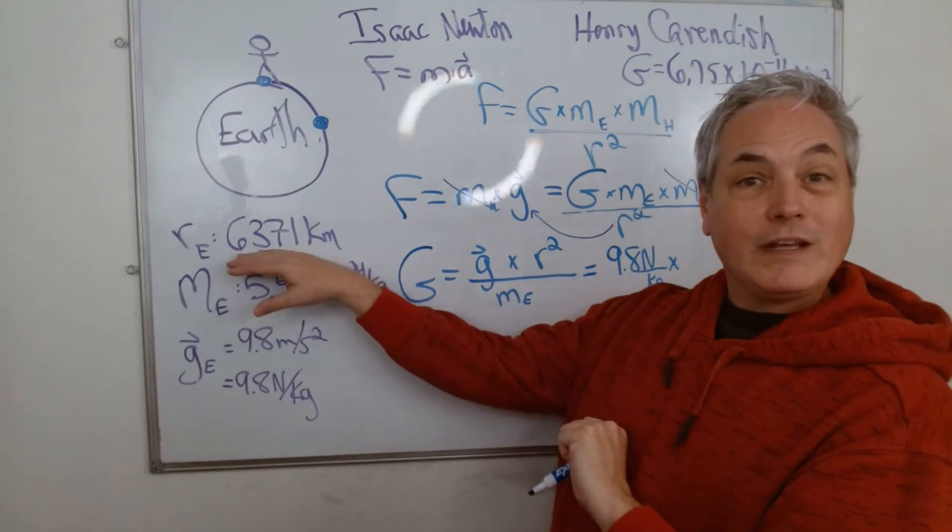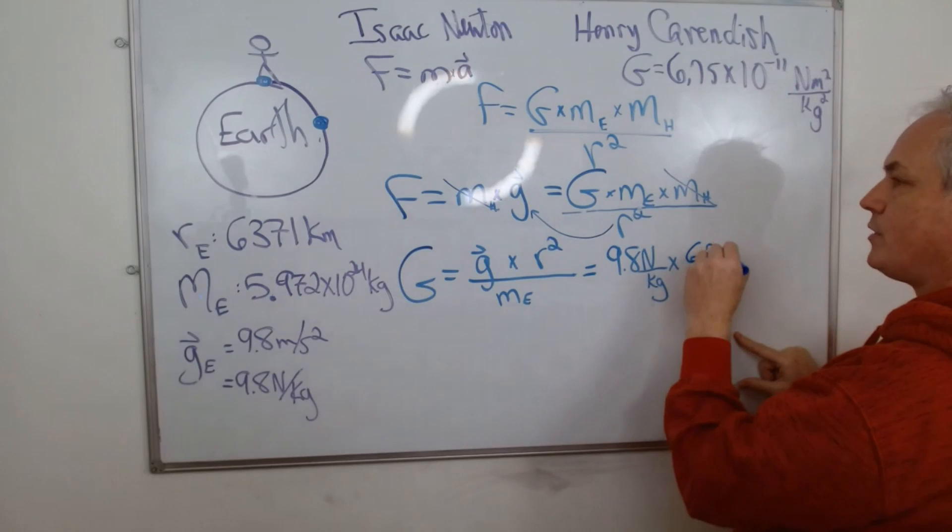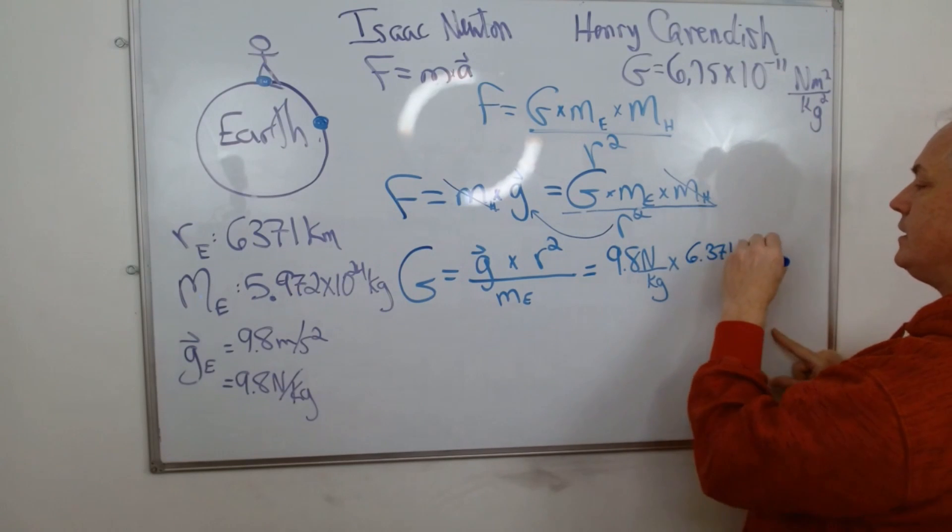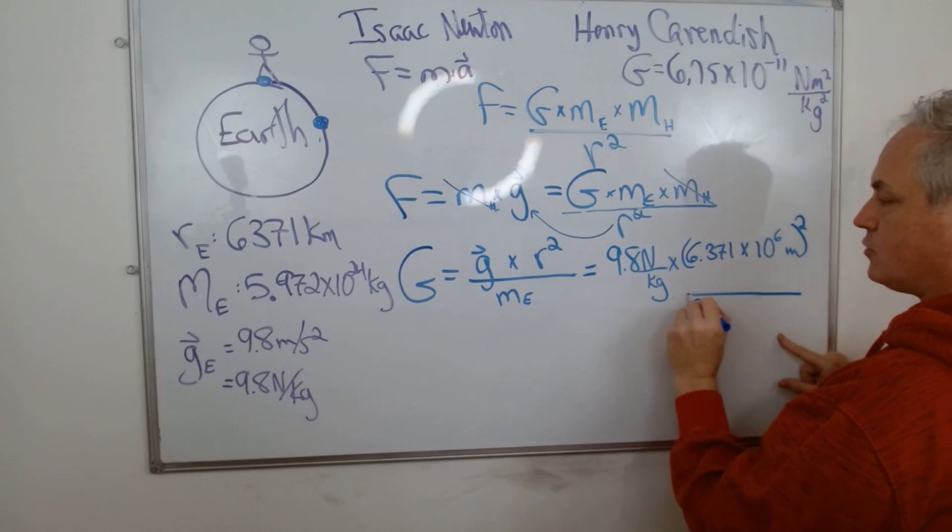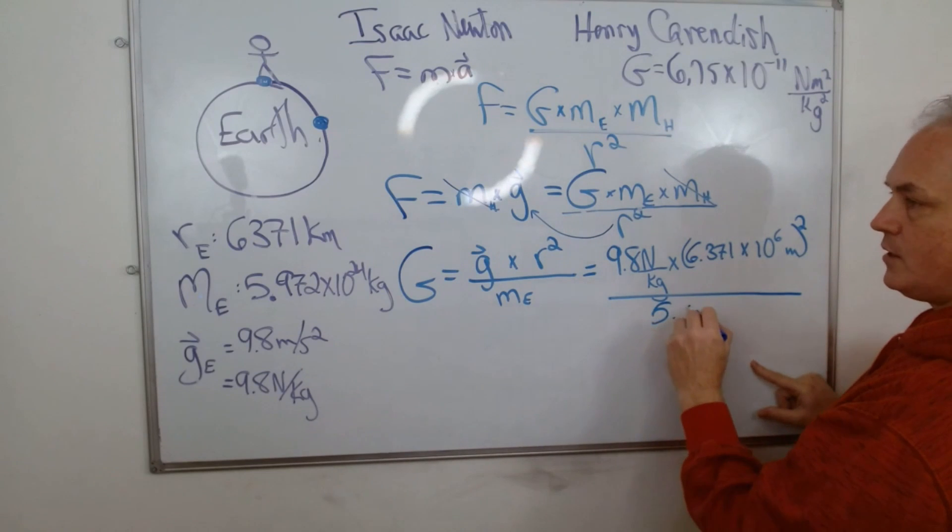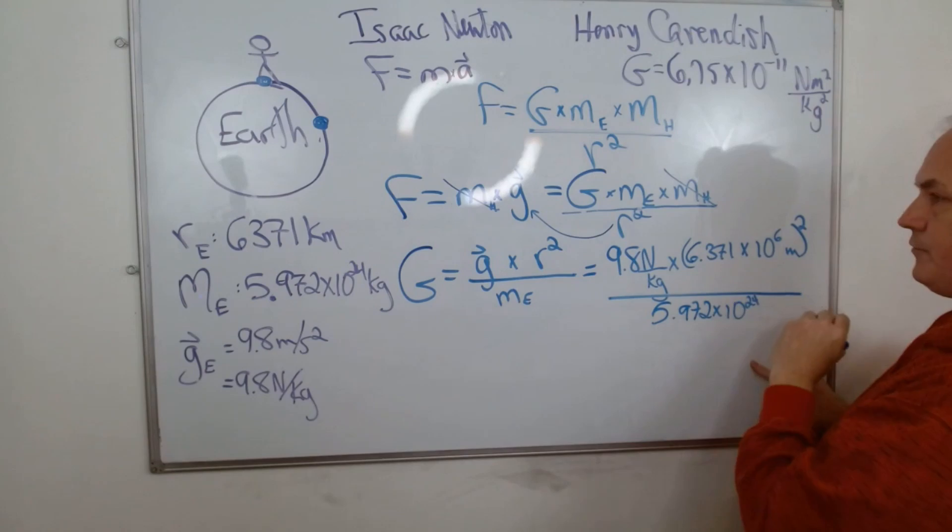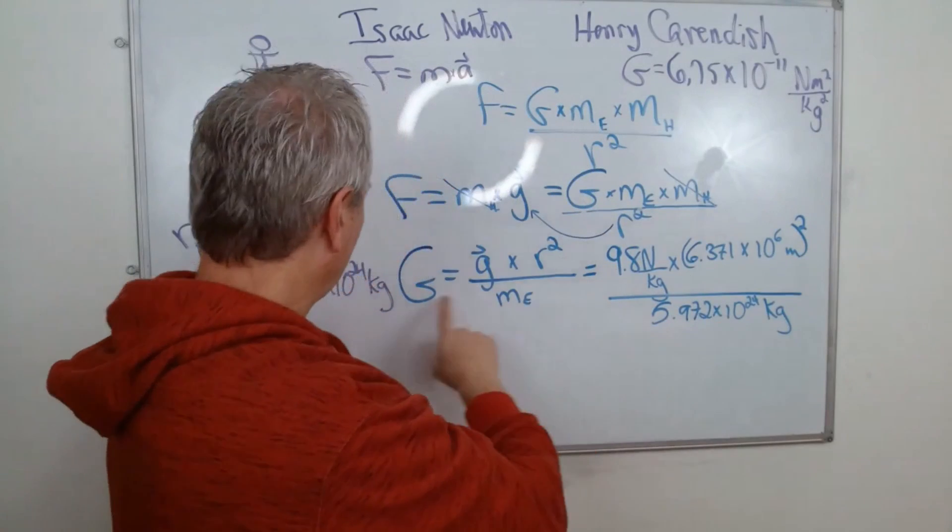Times the radius. So the radius here needs to be in meters, so we have 6.371 times 10 to the sixth meters. This needs to be squared, this needs to be squared, and this is over the mass of Earth, which is 5.972 times 10 to the power of 24 kilograms, like this.